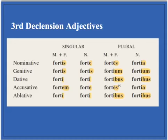The two nominative singulars are fortis for the masculine and feminine, and then forte for the neuter. After this, it declines like a regular I-stem. So in the masculine and feminine, it's: fortis, fortis, forti, fortem, forti — remember, ablative singulars always have an I in all genders — then fortes, then fortium since it's an I-stem, fortibs, fortes, fortibus.